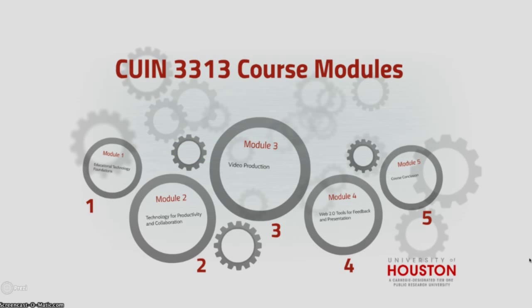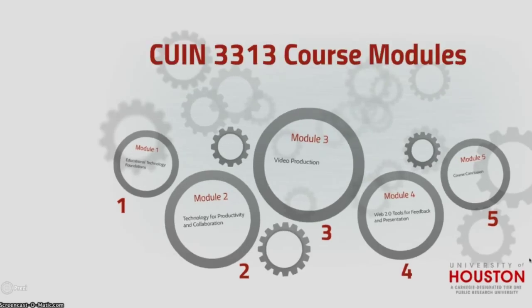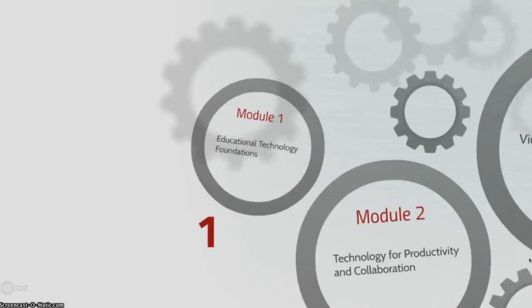The course is organized into five modules. Each module is split into about three sections and you will complete a section each week. Module 1 focuses on educational technology foundations. We will go over computer literacy, copyright, and fair use.